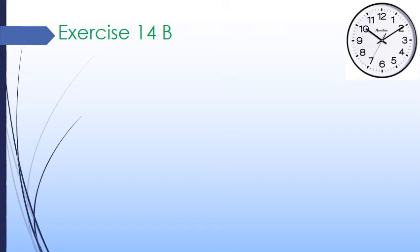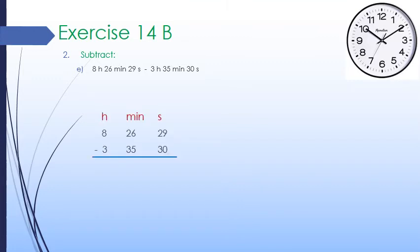Now let's come to question number 2, part E. Here we subtract 3 hours 35 minutes 30 seconds from 8 hours 26 minutes 29 seconds. We make 3 columns of hour, minutes, and seconds. We write 8 hours 26 minutes 29 seconds at the top and 3 hours 35 minutes 30 seconds at the bottom, putting hours under the hour column, minutes under the minute column, and seconds under the second column.